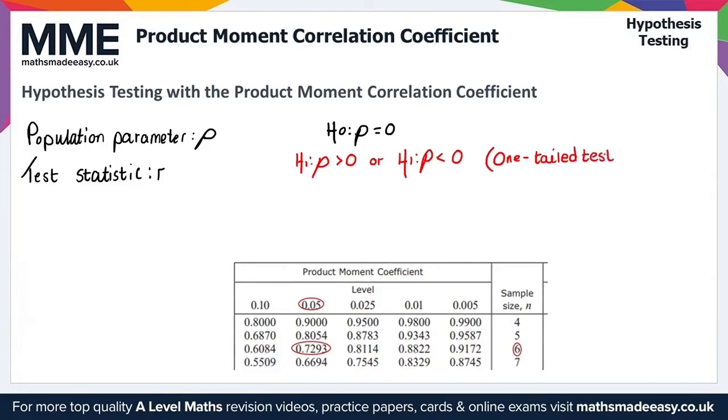That's for a one-tailed test and now let's consider a two-tailed test here. And for a two-tailed test, we only have one possible option here and that's H1 again using our population parameter of rho is not equal to zero there. So that's for a two-tailed test.